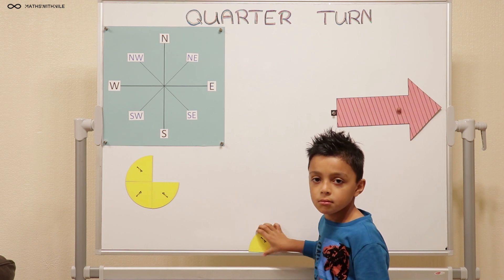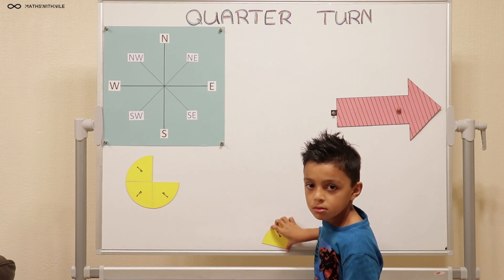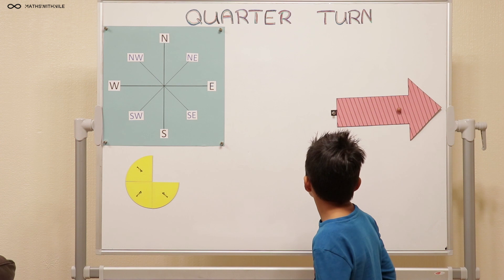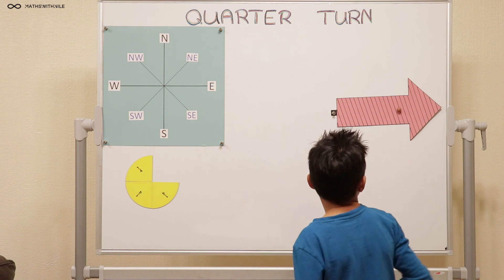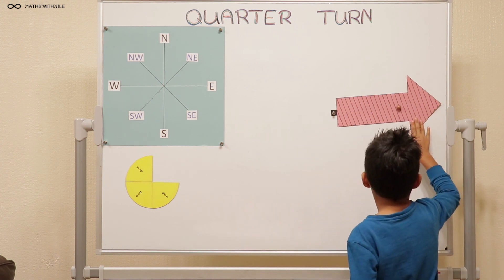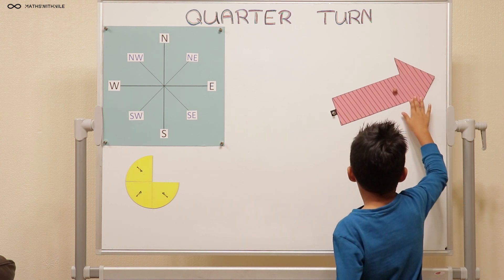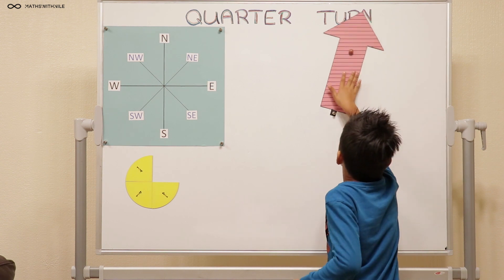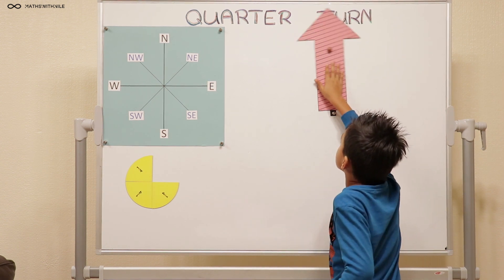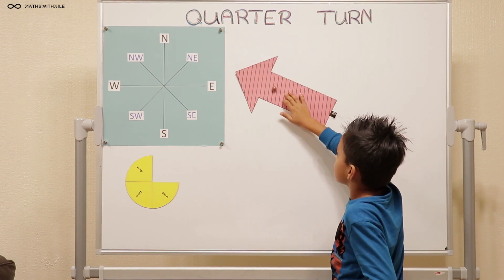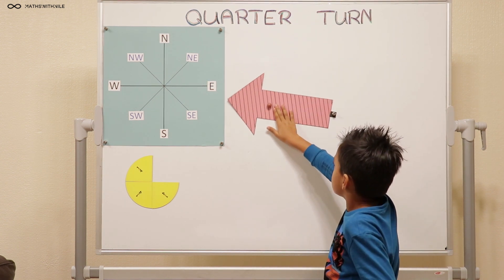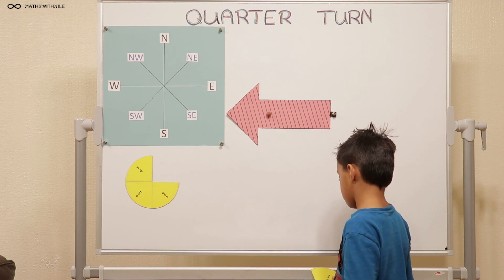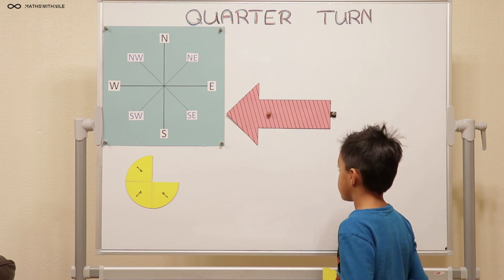Can you move it two quarters turn anti-clockwise? What are you going to do now? One quarter turn anti-clockwise, two quarters turn anti-clockwise. Very good. So you're turning it in the opposite direction.